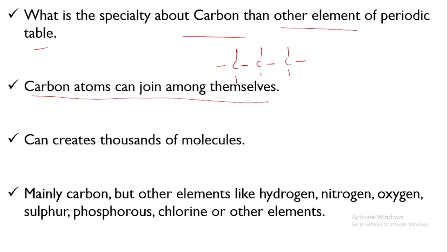In organic compounds, besides carbon, we find elements like nitrogen, hydrogen, oxygen, sulfur, and halogens. Nitrogen is found in proteins and amino acids — amino acids contain amino groups. Hydrocarbons contain carbon and hydrogen, while nitrogen, halogens, and sulfur are also common elements in organic compounds.